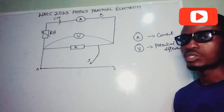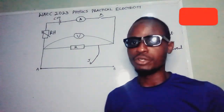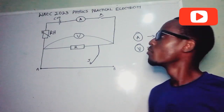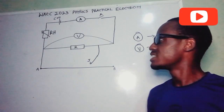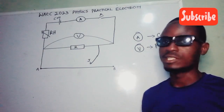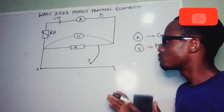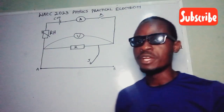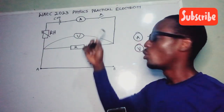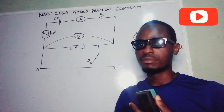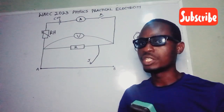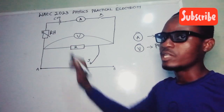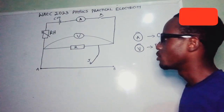In this experiment, because we have a lot of resistors connected, we would expect the current to have a very low reading while the potential difference has a high reading. Now let's take a look at this diagram as a point of reference.